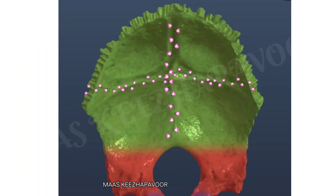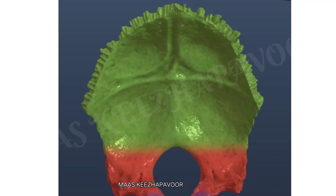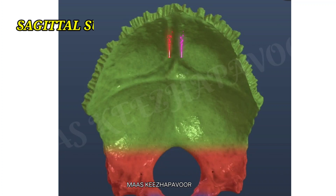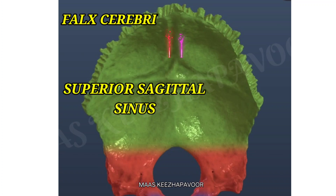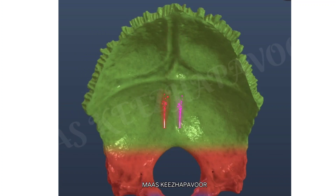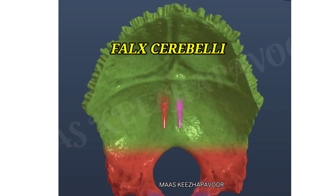From this eminence, cruciform-shaped lines radiate superiorly, inferiorly, and transversely. The vertical line above the internal occipital protuberance is the sagittal sulcus, which gives attachment to the falx cerebri — this lodges the superior sagittal sinus. The vertical line below is the internal occipital crest, which gives attachment to the falx cerebelli, and lodges the occipital sinus.